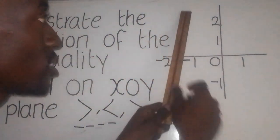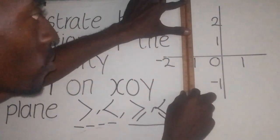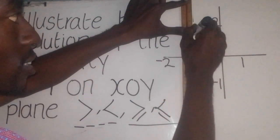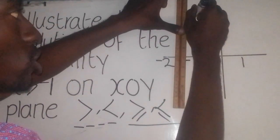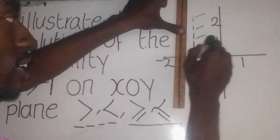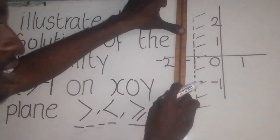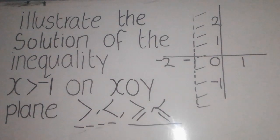So, we need to draw like this. We draw a dotted line here, like this. Then, now, you shade this side here, like this. You shade this side. So, this is the answer.